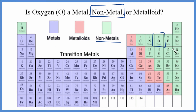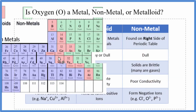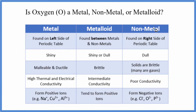Going back to our table: because oxygen is a nonmetal, it's found on the right-hand side of the periodic table. It's a gas and it's invisible — we can't see it. But if you froze it, if you made it a solid, it would be dull, probably brittle, and wouldn't be very conductive.